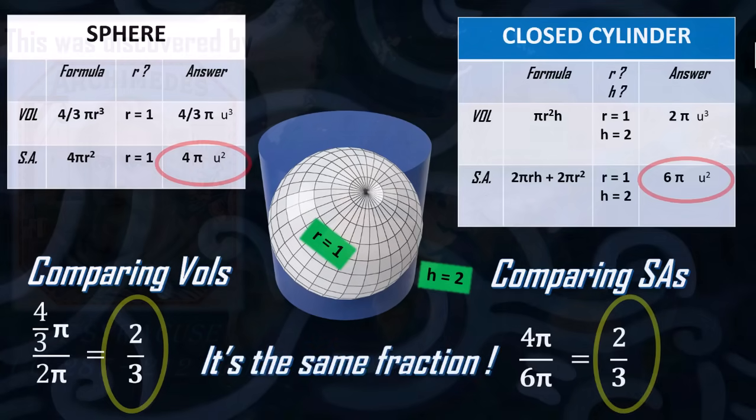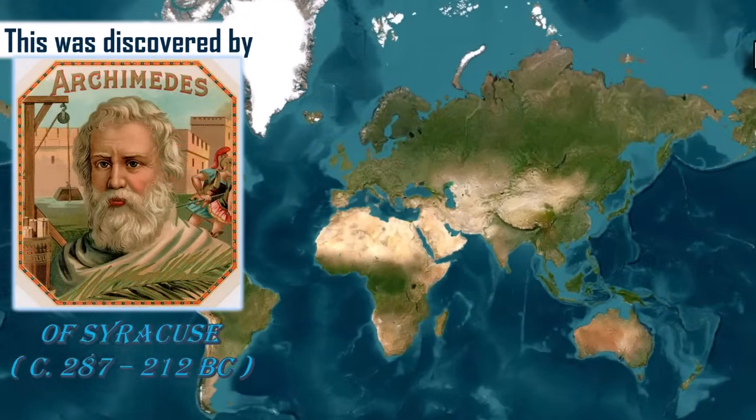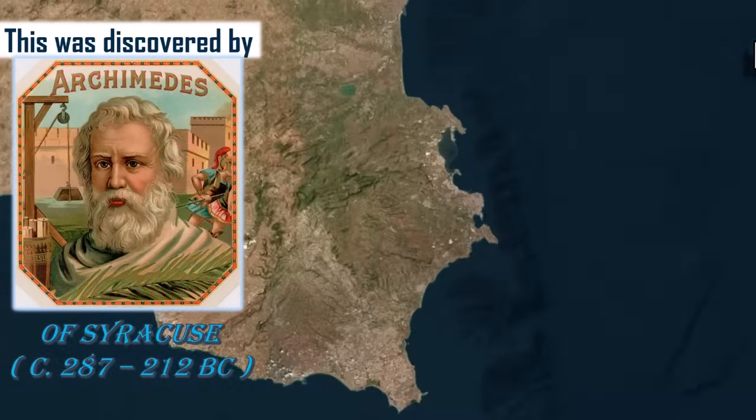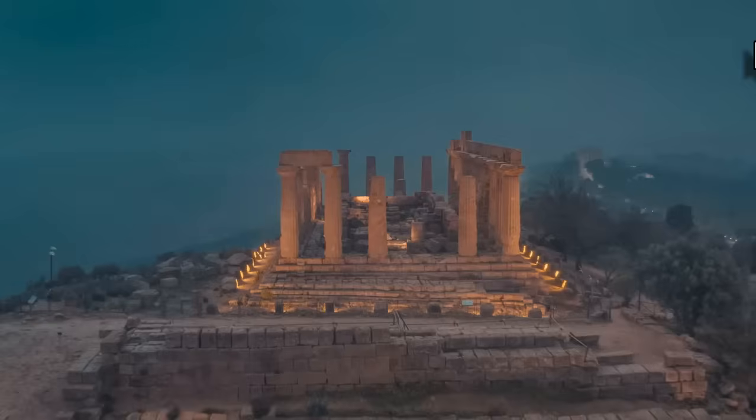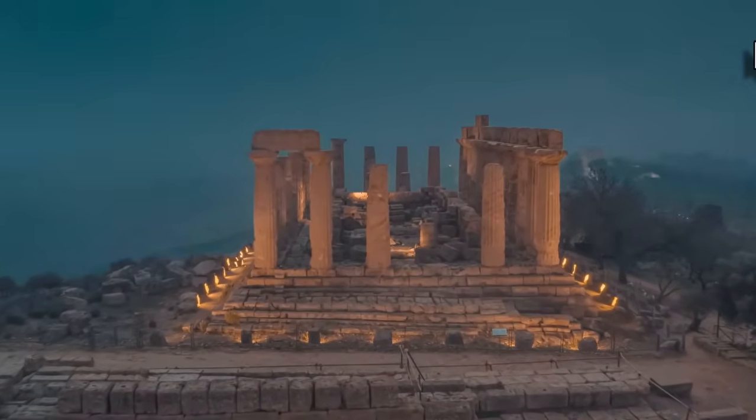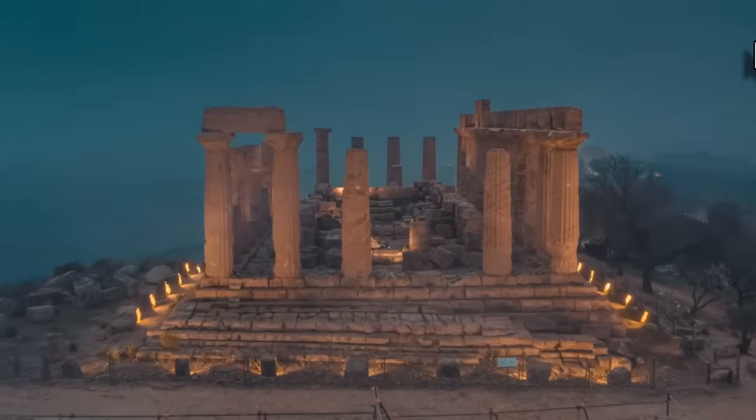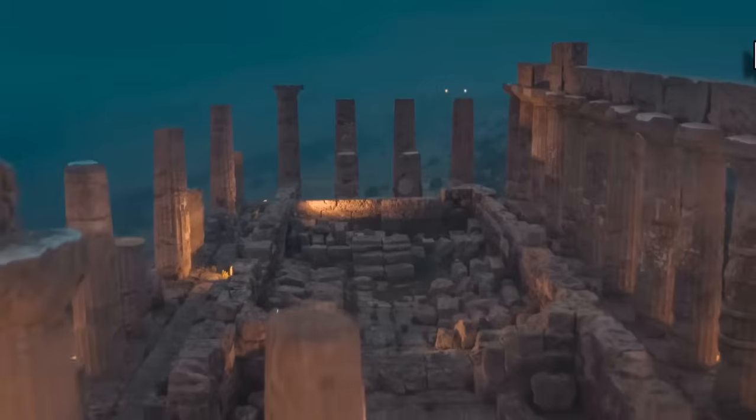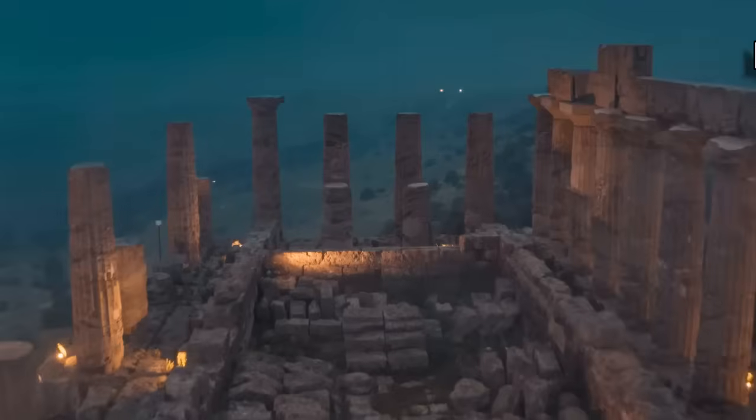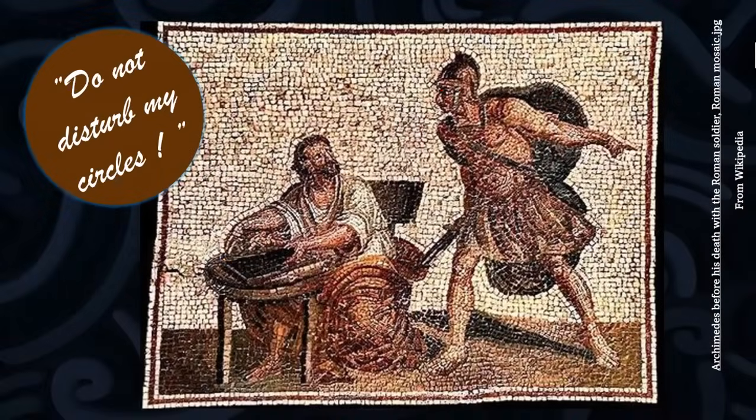This was discovered by none other than Archimedes. Now Archimedes was from Syracuse, and here is an ancient Greek temple on the island of Sicily. The armies of the Roman general Marcellus eventually overcame the defences of Syracuse, which Archimedes had been using his ingenuity to improve. This Roman mosaic depicts a Roman centurion giving Archimedes an order to which he responds, Do not disturb my circles.